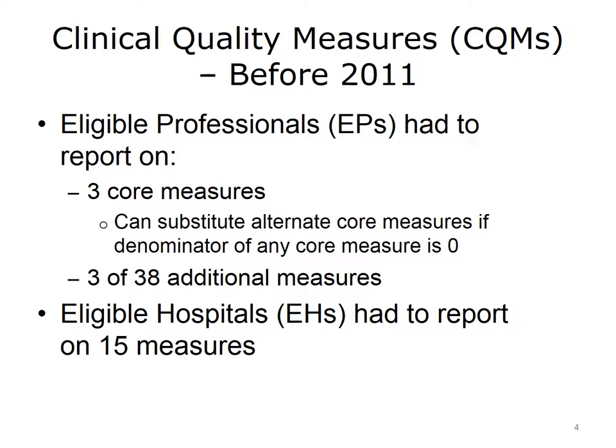For some EPs, those core measures were inappropriate — for example, they might have a denominator of zero. Therefore, some substitute measures were allowed. There was also a list of 38 additional measures, of which three needed to be reported on. Eligible hospitals, or EHs, had to report on 15 measures.